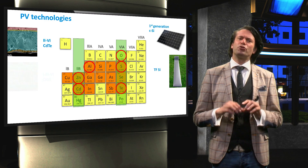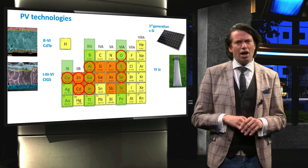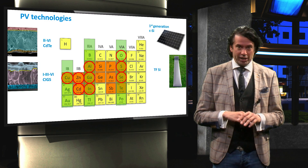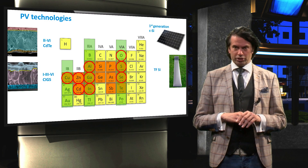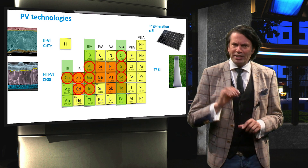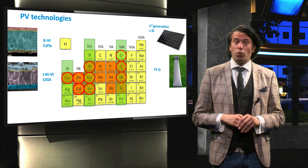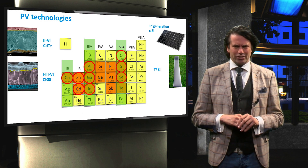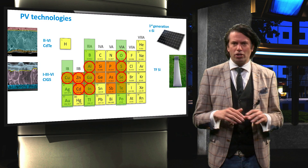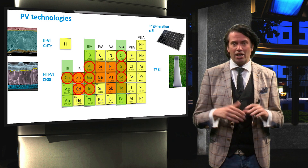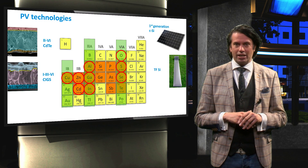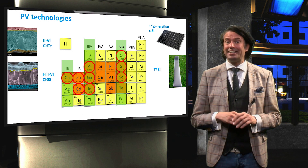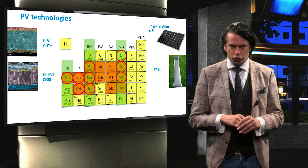The second group of chalcogenide solar cells are the chalcopyrite solar cells, which consist of the elements from group 1, 3 and 6. Foremost among these are the copper-indium-gallium-diselenide solar cells, or CIGS for short.